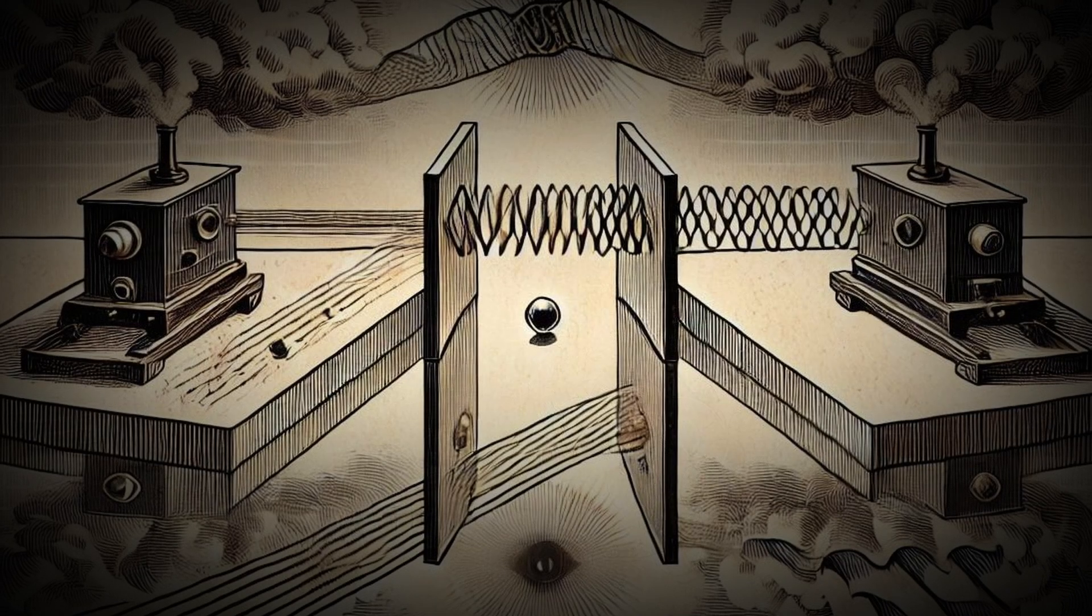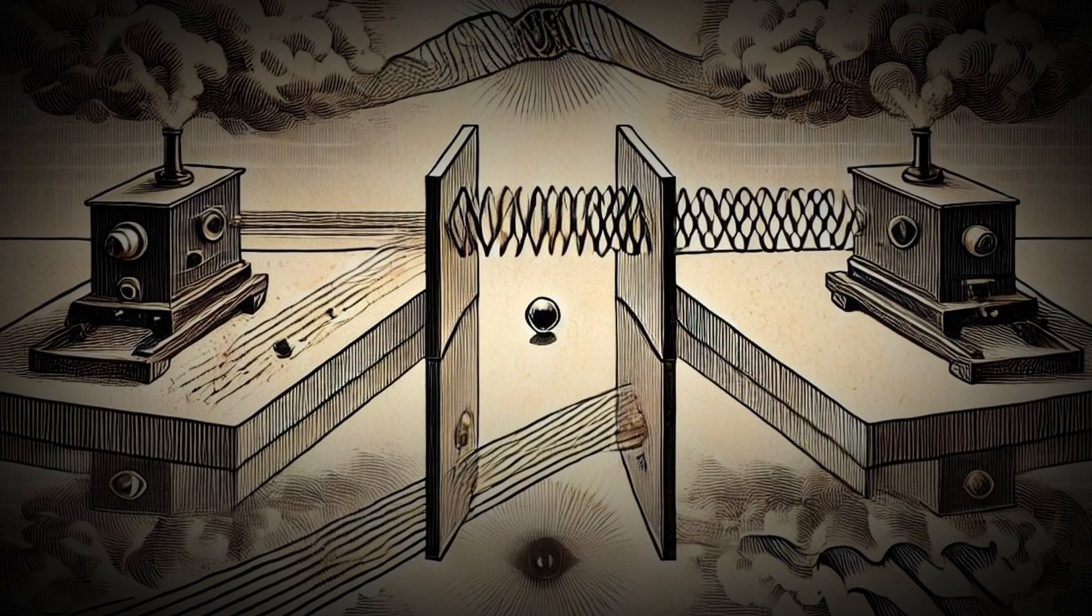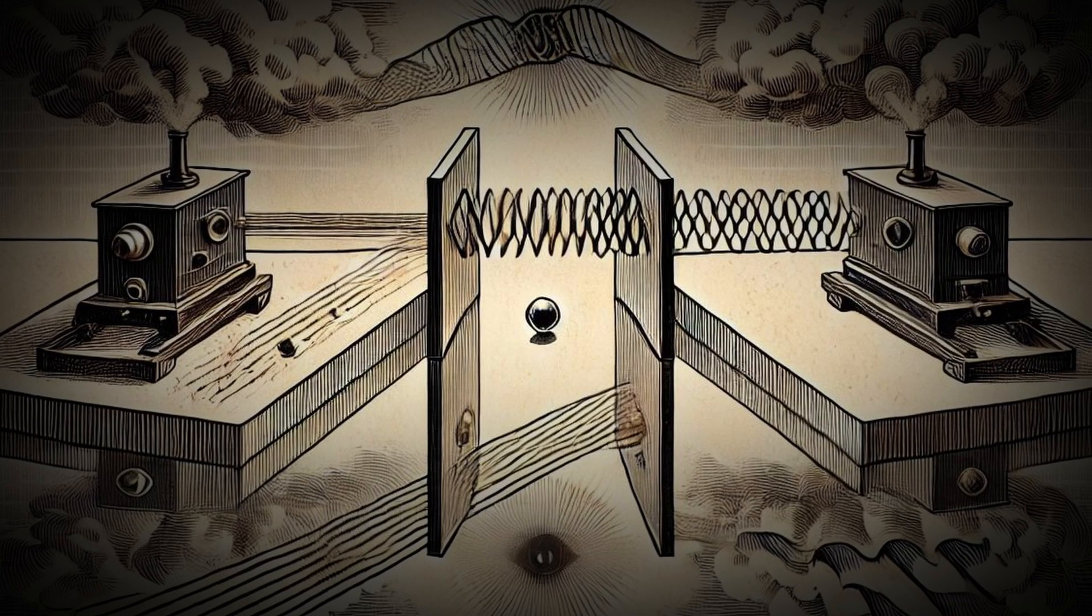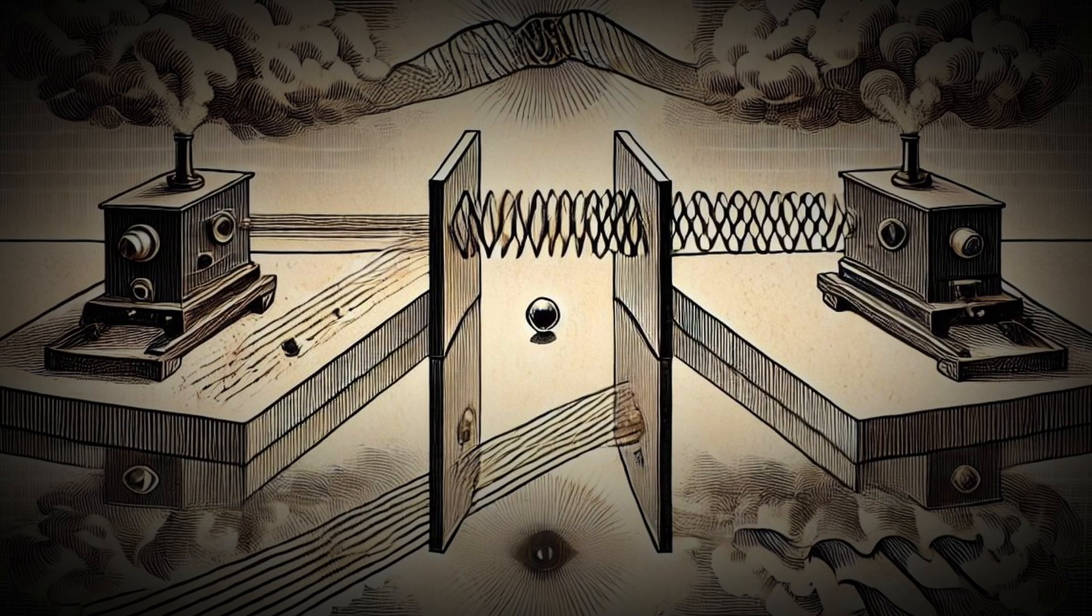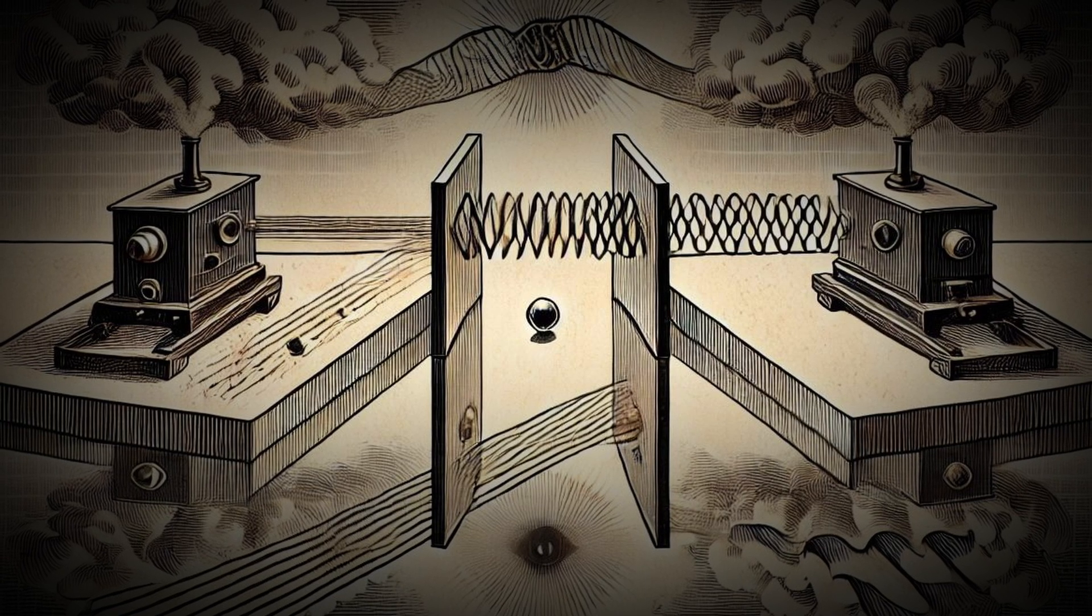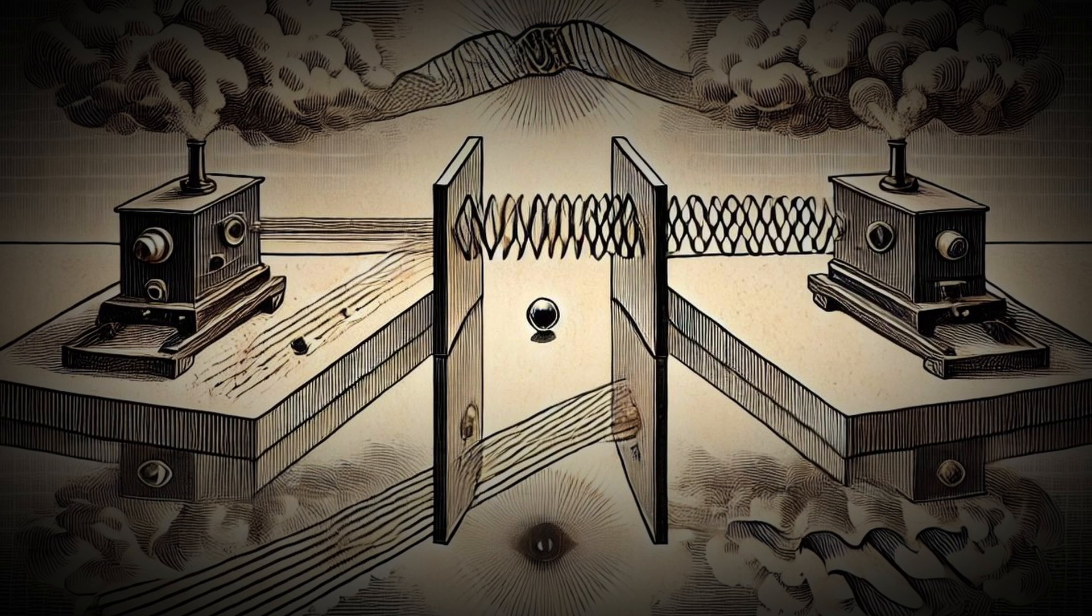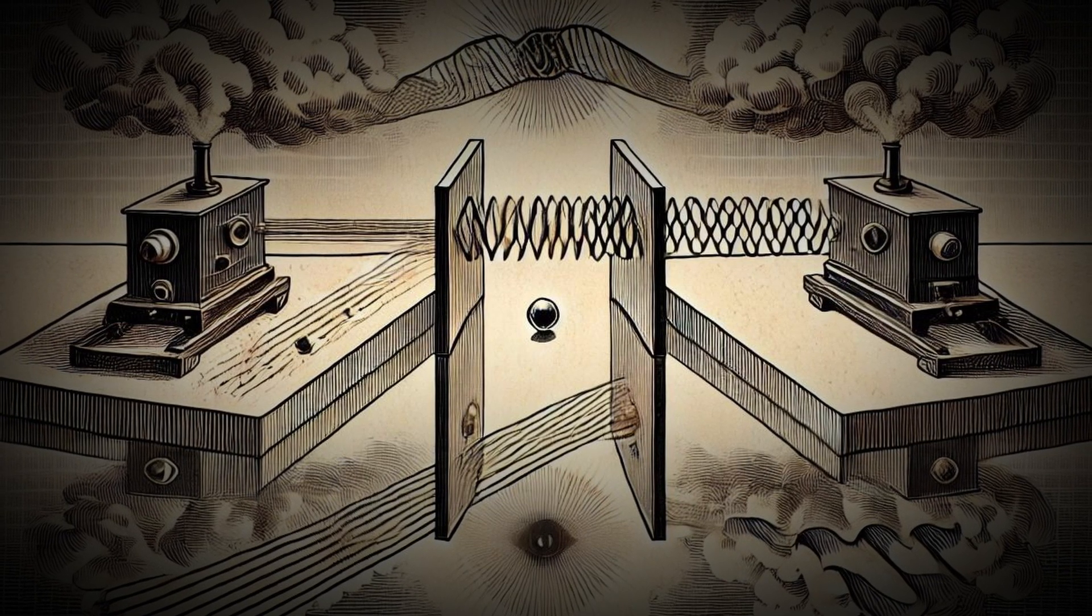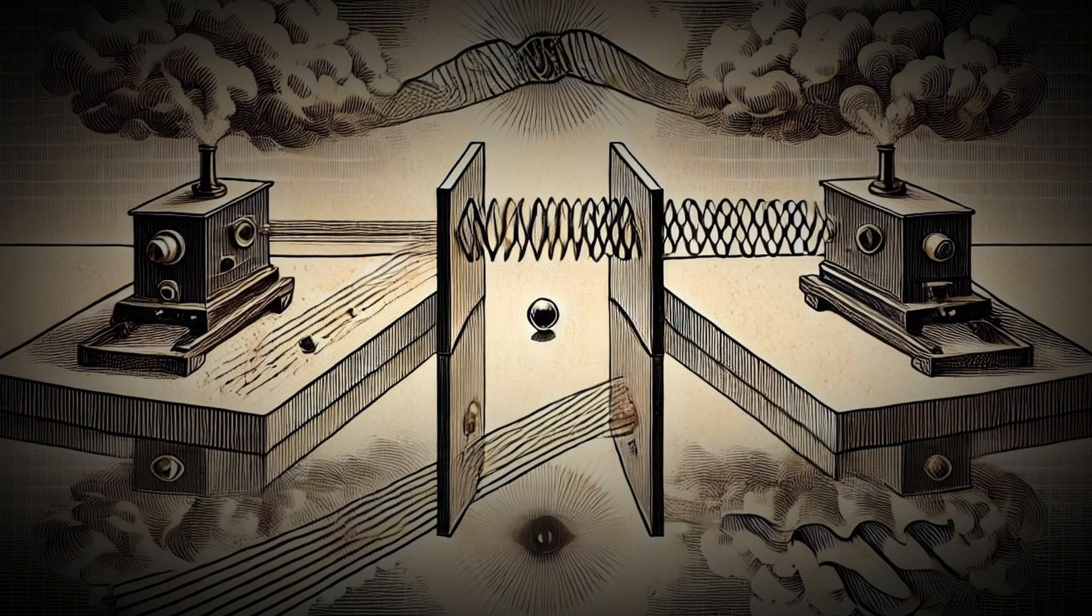Here's where it gets really weird. When scientists place a detector to observe which slit each electron goes through, the interference pattern disappears. In other words, when we measure the electron's path, it behaves like a particle. When we don't measure, it behaves like a wave. This phenomenon underscores the observer effect in quantum mechanics. It isn't that the electron consciously decides how to behave. It's that our act of measuring changes the conditions of the experiment.